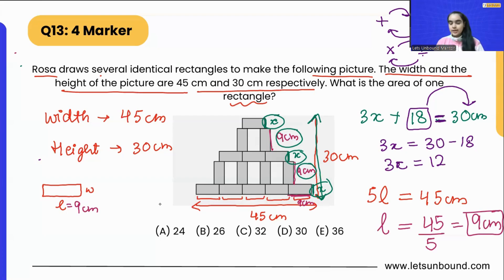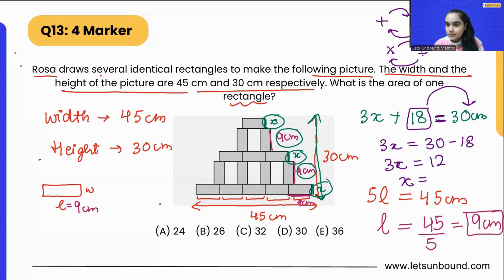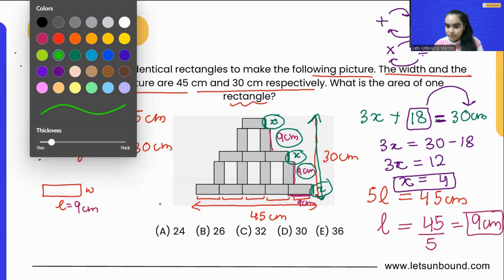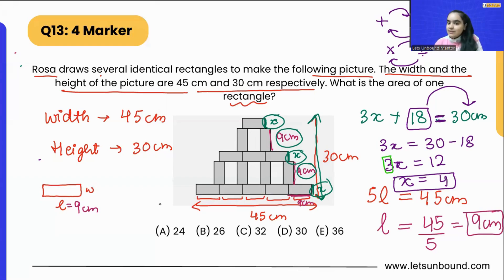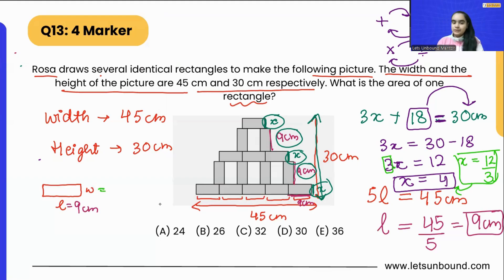Three shorter sides equal 12, so we need to find the size of one shorter side. 3 times 4 is 12, so x = 4. Alternatively, since 3 is multiplying x, we shift it to the other side by dividing: 12 ÷ 3 = 4. So the width of the rectangle is 4 centimeters.